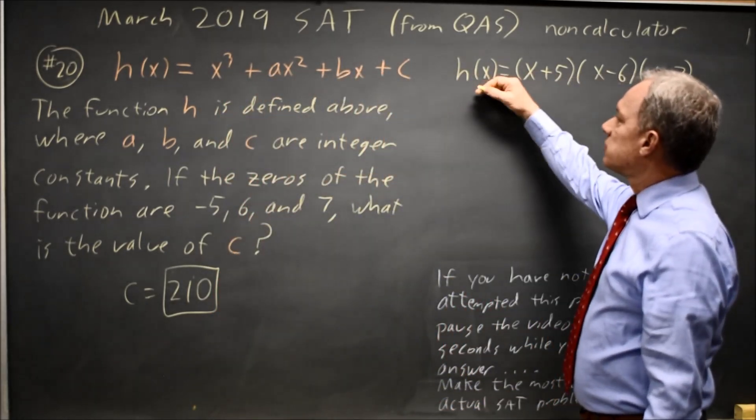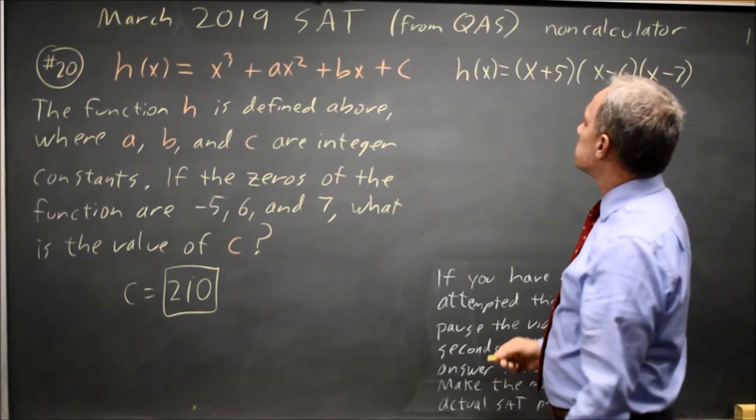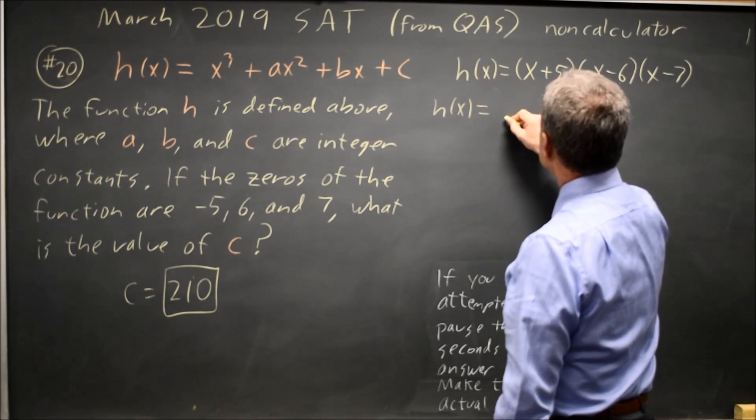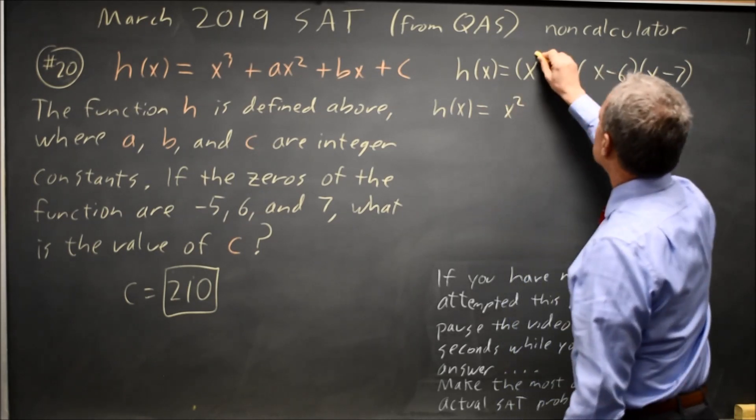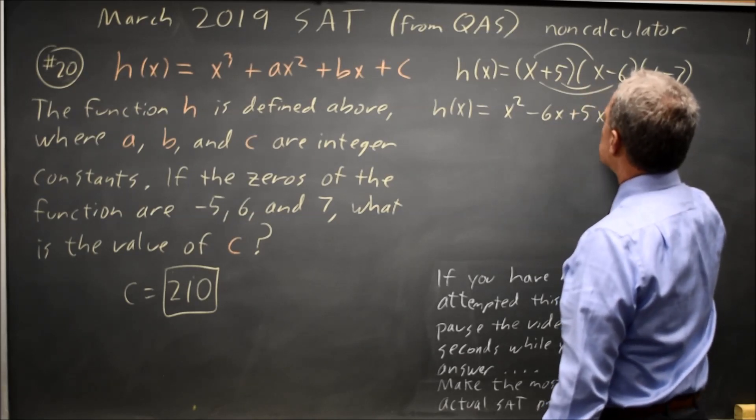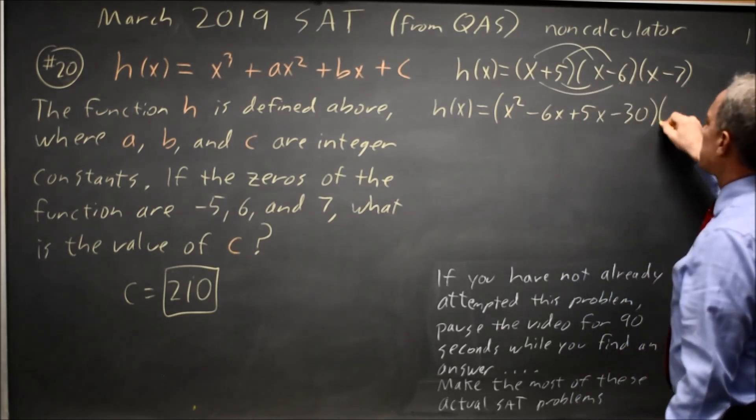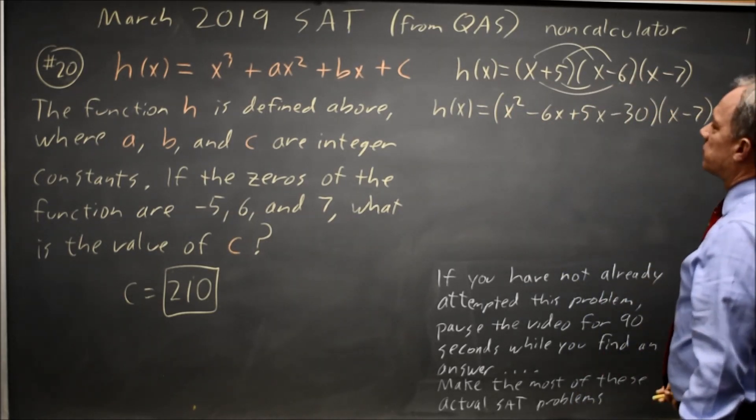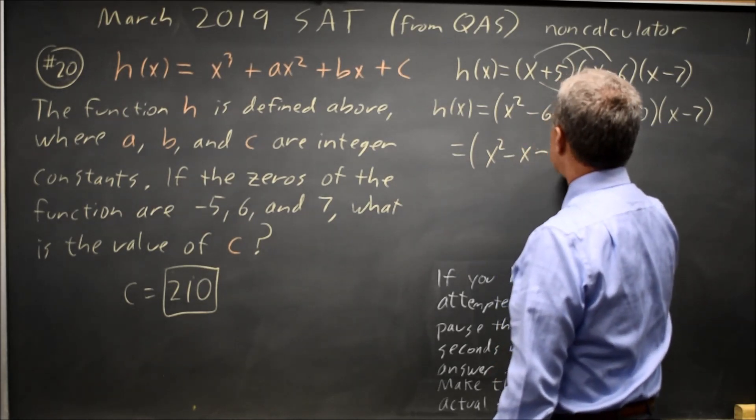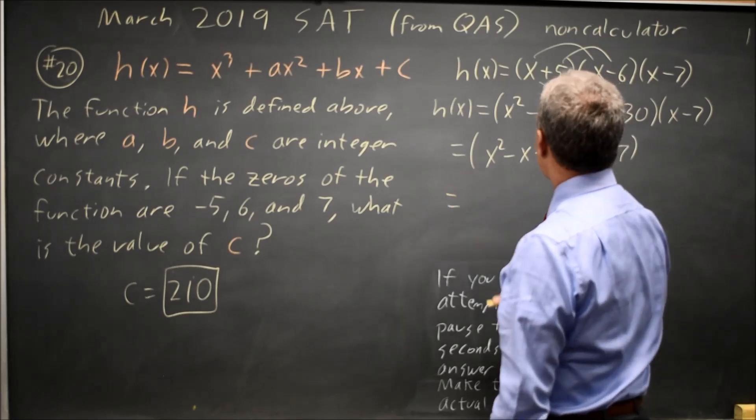If you know that these are the zeros, but you don't know to multiply those three constants, we can use FOIL. That gives us h(x) equals x squared minus 6x plus 5x minus 30, and then that quantity times (x minus 7). So that simplifies to x squared minus x minus 30, and then distributing...